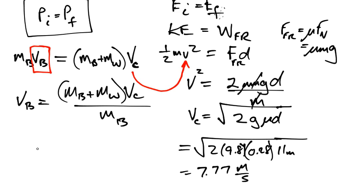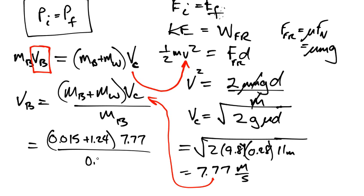And now, I can now plug that value into here. I can now plug this value into here, and I've pretty much solved the problem. Now, we're going to go 0.015 plus 1.24 times 7.77 divided by 0.015, and then let's go 0.015 enter 1.24 plus times 0.015 divided by, and the answer is 650 meters per second.